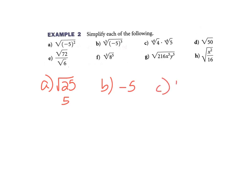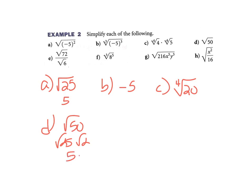Part C: the 4th root of 4 times the 4th root of 5 — because they're both 4th roots, you're allowed to multiply them, and you get the 4th root of 20. Part D: the square root of 50 — some radicals need to be broken down as much as you can. 50 can be broken down with a 2 and a 25. So I write it as the square root of 25 times the square root of 2. The square root of 25 is 5; I don't know the square root of 2, so I'm stuck there.